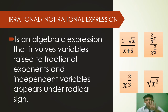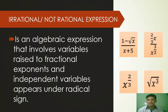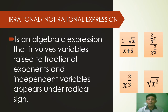Example number 4: the square root of X cubed. It is irrational because the independent variable has a radical sign, which is the square root. Therefore, all of them are irrational algebraic expressions.